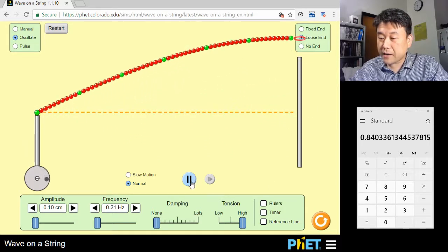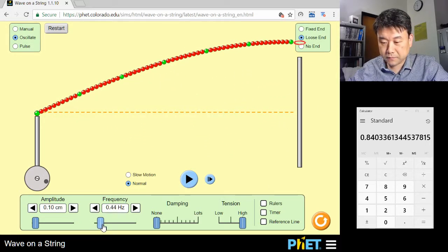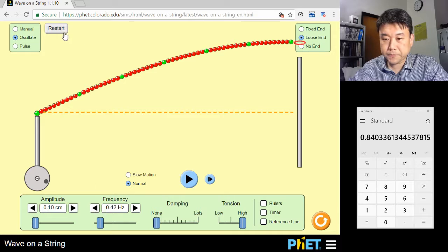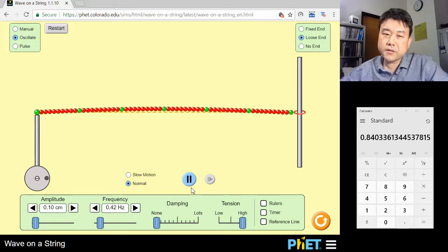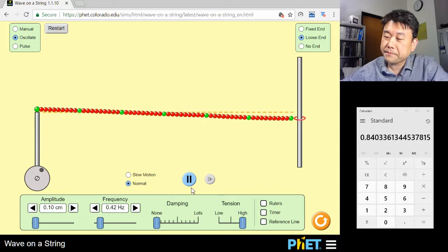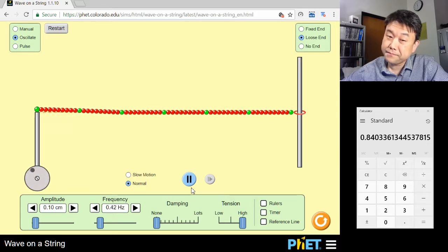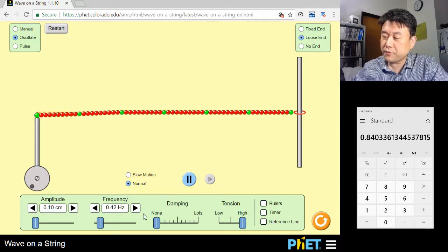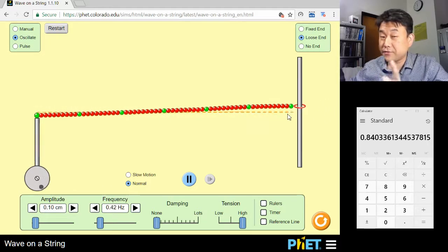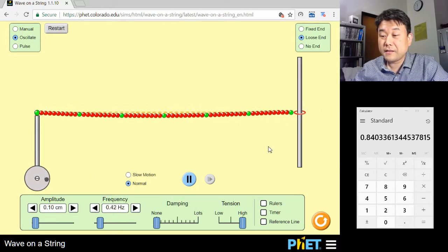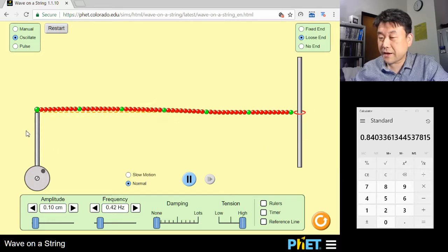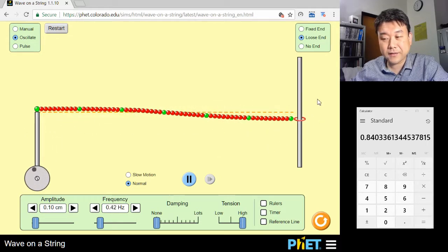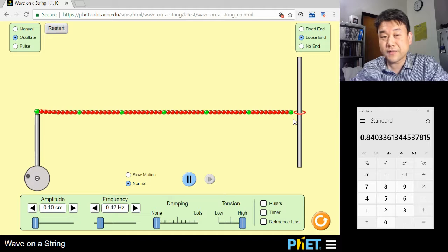If I double the frequency to 0.42, I don't get a standing wave. It's because this frequency requires a node at the end. You saw that earlier. But in this setup, I can only get an antinode at this end if I'm going to get a standing wave.